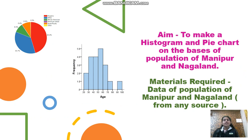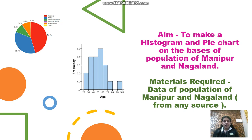The aim of today's art integration is to make a histogram and pie chart on the basis of the population of Manipur and Nagaland. The materials required will be data of the population of Manipur and Nagaland from any source.